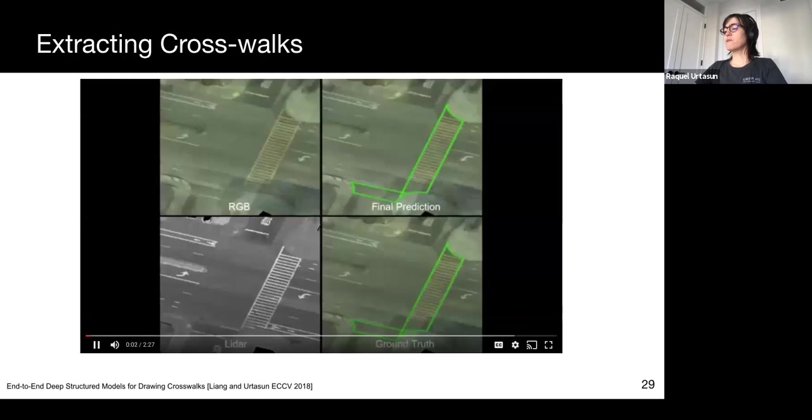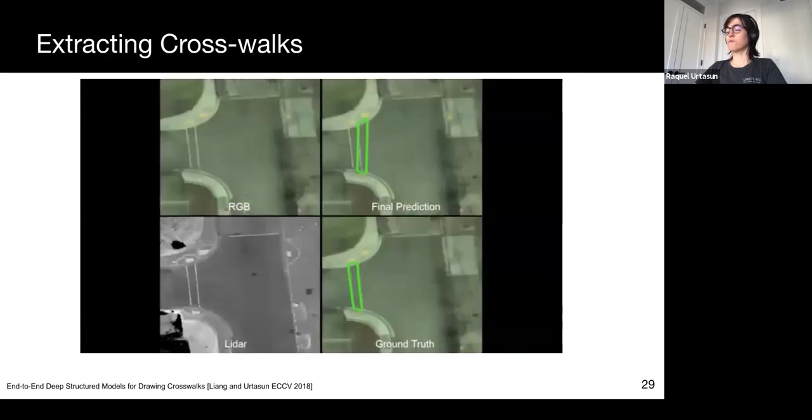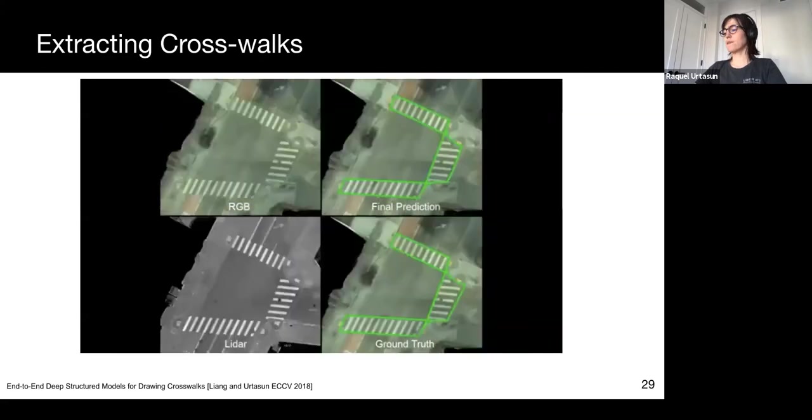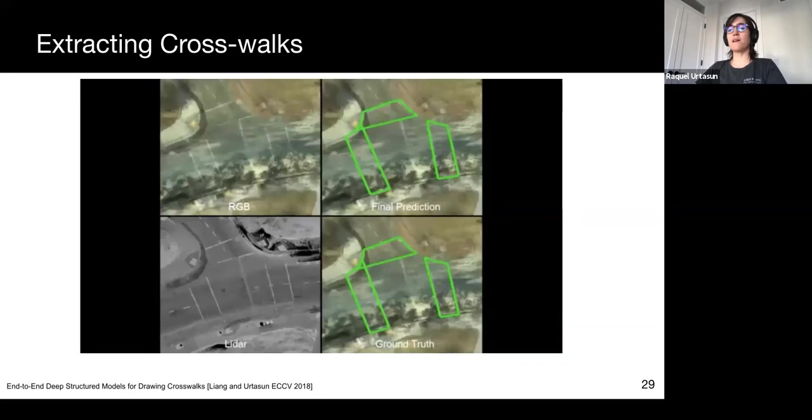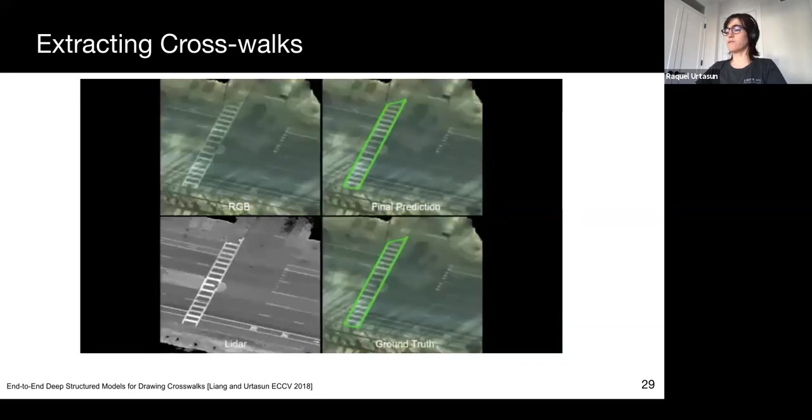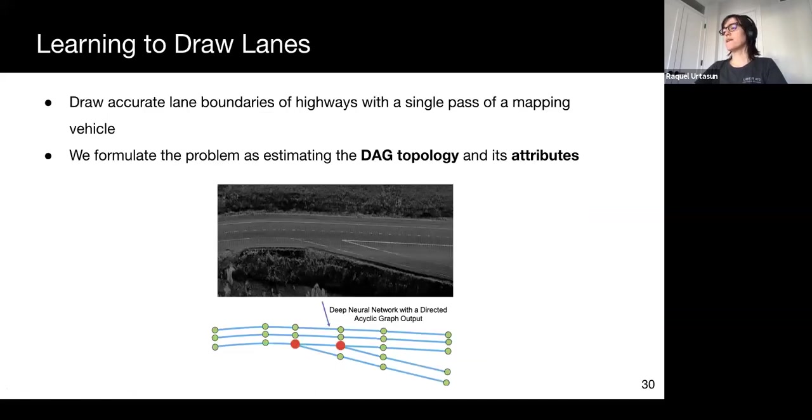Our model achieves 96.6% automation of crosswalks. In this video, we showcase our model results, which are on the top right, compared to the ground truth, which is in the bottom right. We see that our model draws very accurate crosswalks when compared to the ground truth, and thus achieves very high level of automation.